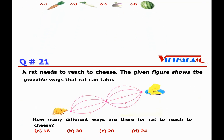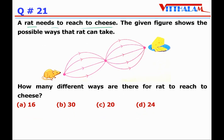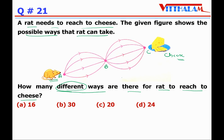Next, Question 21: a rat needs to reach the cheese. The given figure shows the possible ways the rat can take. How many different ways are there for the rat to reach the cheese? Let's label the paths — suppose I name the middle junction points as A, B, C and the routes as B, D, E, F on one side, and G, H, I, J, K on the other side leading to the cheese.